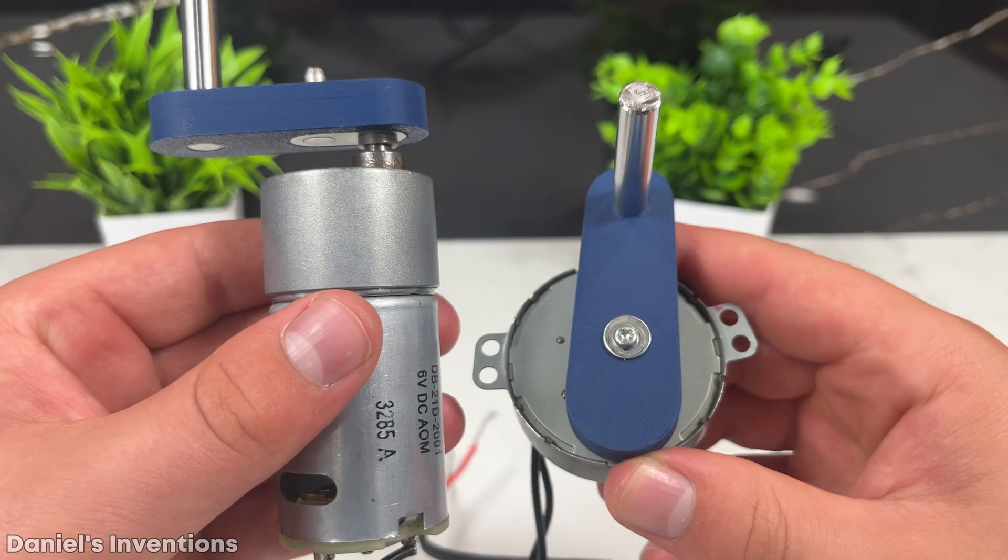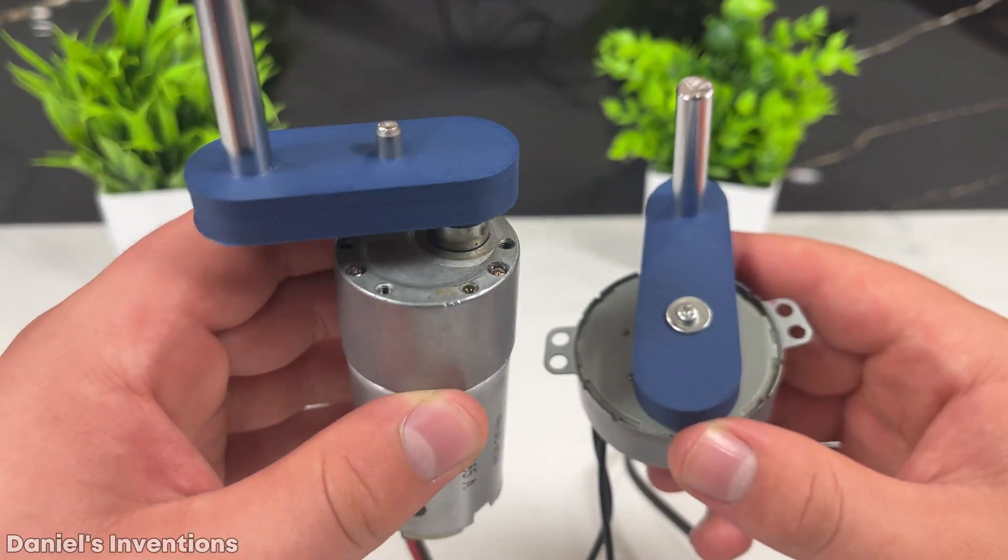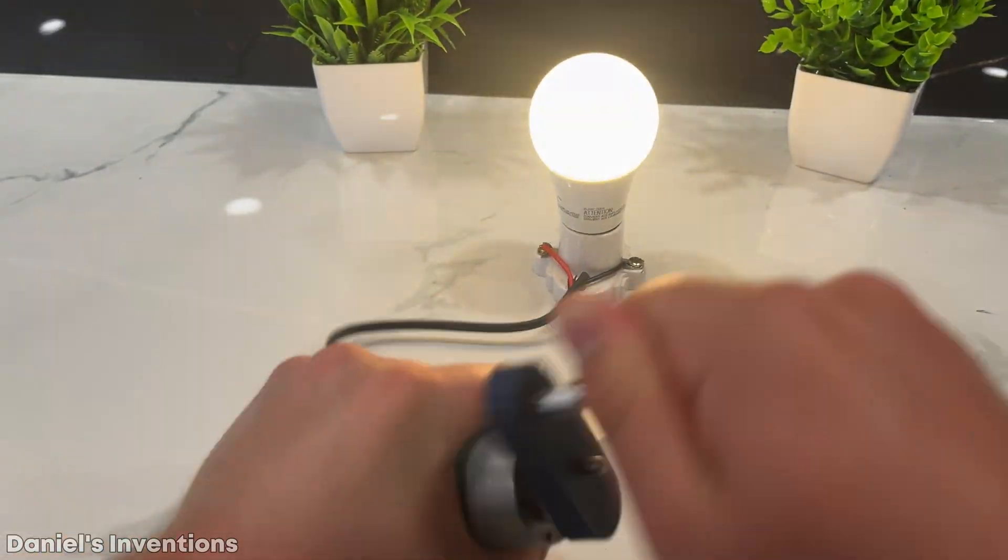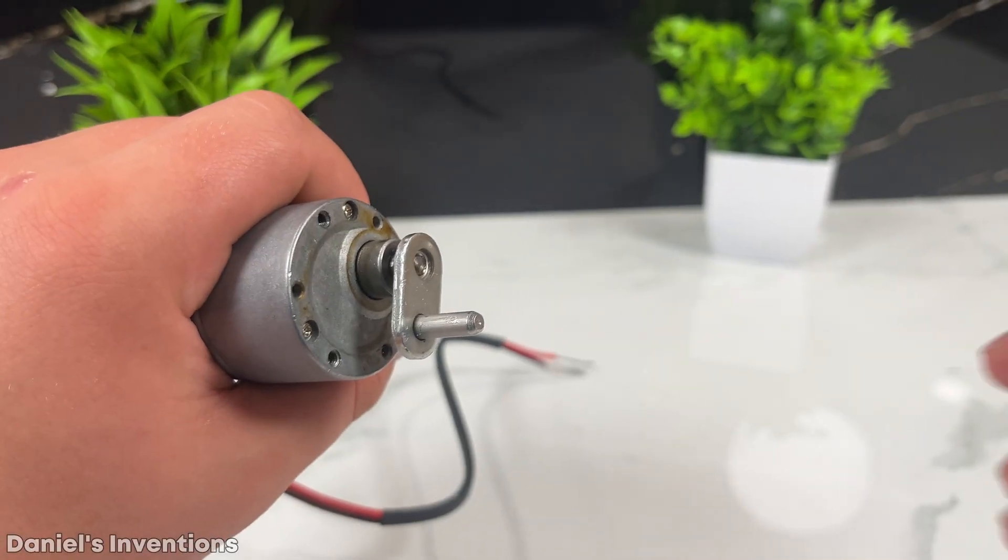AC generator, DC generator. The DC motor can generate up to 100 volts DC by spinning it very fast.